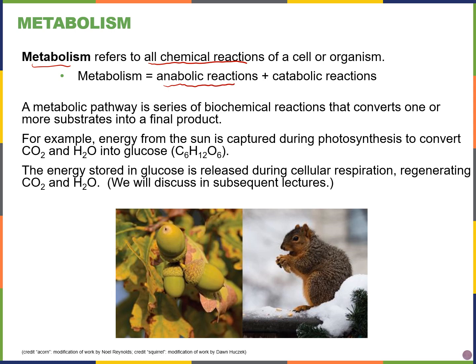Metabolism includes all of the building reactions — also known as anabolic reactions or anabolism — and all of the reactions that break down larger molecules into smaller molecules, which are called catabolic reactions or catabolism. A metabolic pathway is a series of biochemical reactions that convert one or more substrates into some kind of final product.